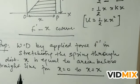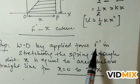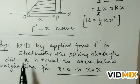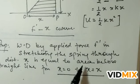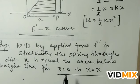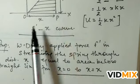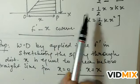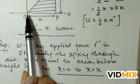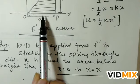One important point: the work done by the applied force F' in stretching the spring through distance x is equal to the area below the straight line from x = 0 to x = x. The energy stored in the spring while stretching it can be found by this graphical method as 1/2 kx², where F' is the applied force and x is the displacement or stretch of the spring.